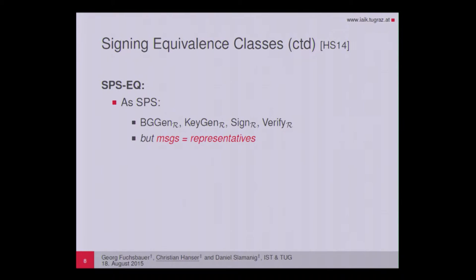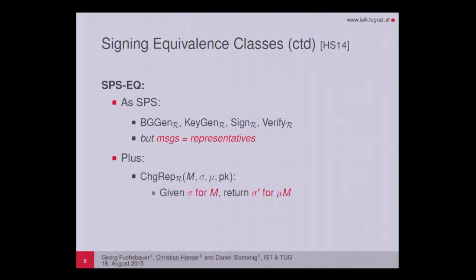Like ordinary structure-preserving signatures, SPS-EQ has a bilinear group generation algorithm, a key generation algorithm, a signing algorithm, and a verification algorithm. Additionally, there is an algorithm that performs the change of representative, taking as input a message-signature pair and outputting a signature for another representative of the same class, depending on some scalar mu used for choosing the other representative.